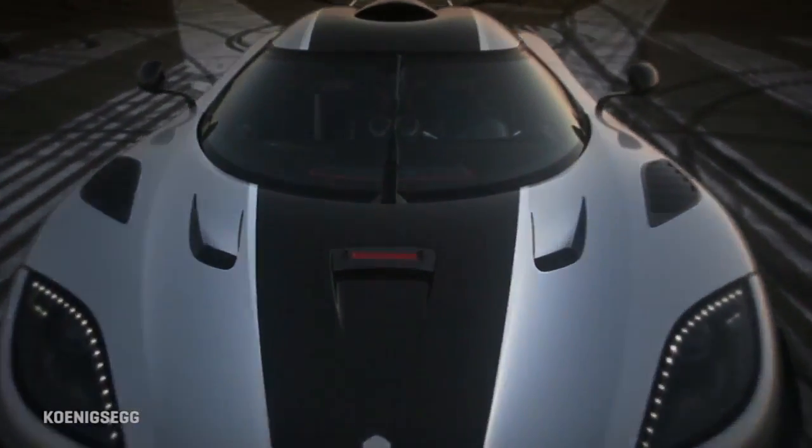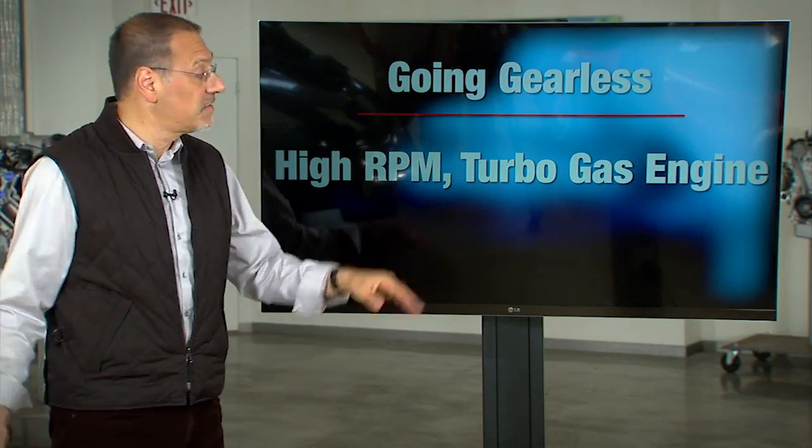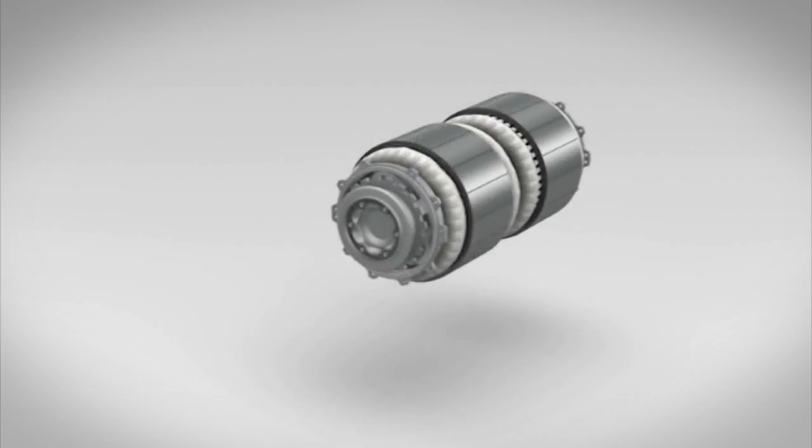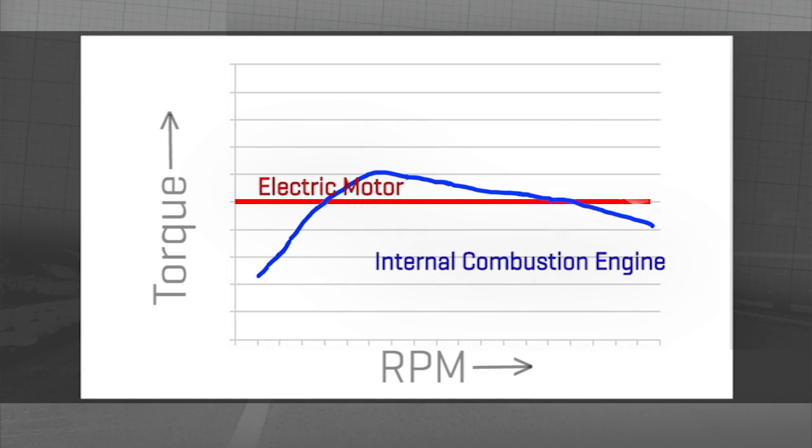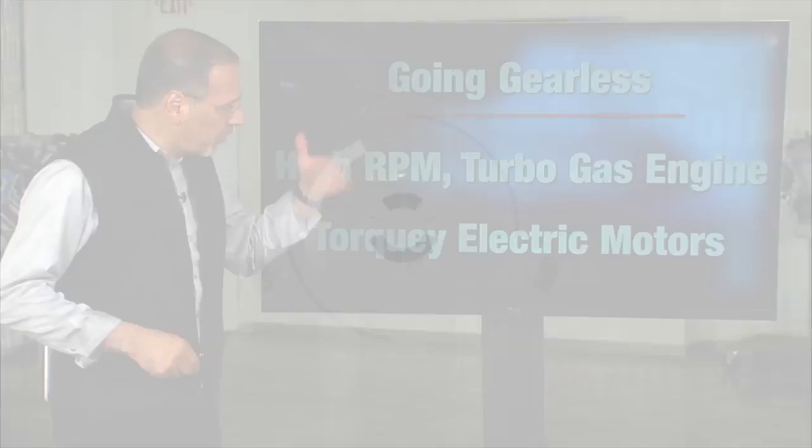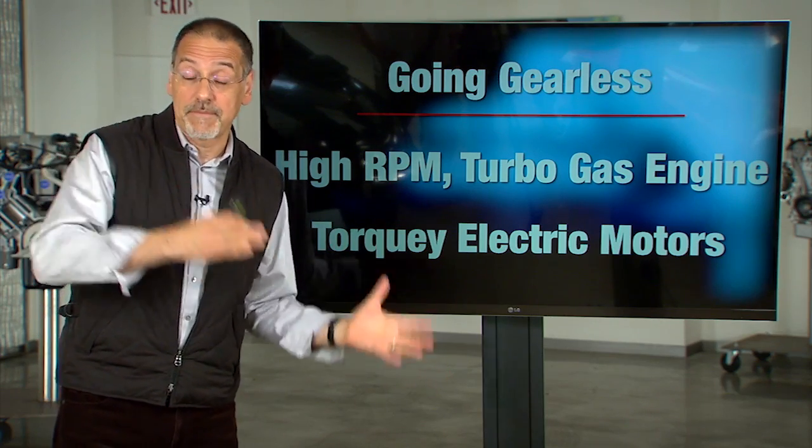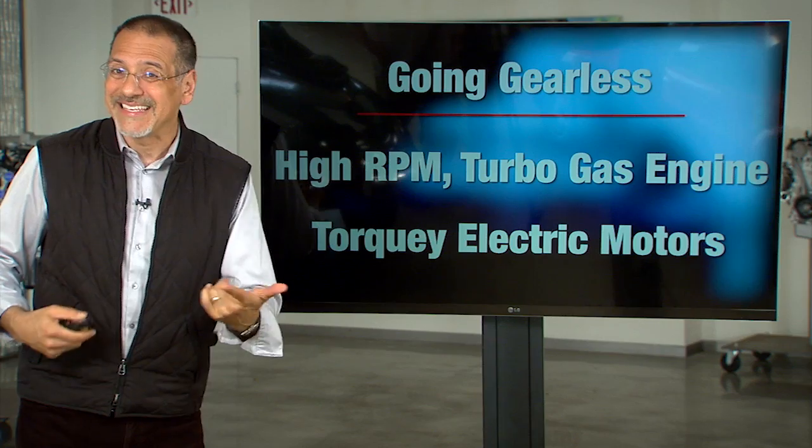So Koenigsegg says we can do that because of two interesting trends in powertrains. One, we have higher RPM high performance engines and turbos give them better lower end grunt. Secondly, we have very torquey electric motors that are quite well proven these days. Electric motors have all their torque from zero on up and can spin at a wide range of RPMs. Put it all together here and maybe your powertrain has a wide enough range of RPMs and abilities to deliver power that it doesn't need gears to help it.